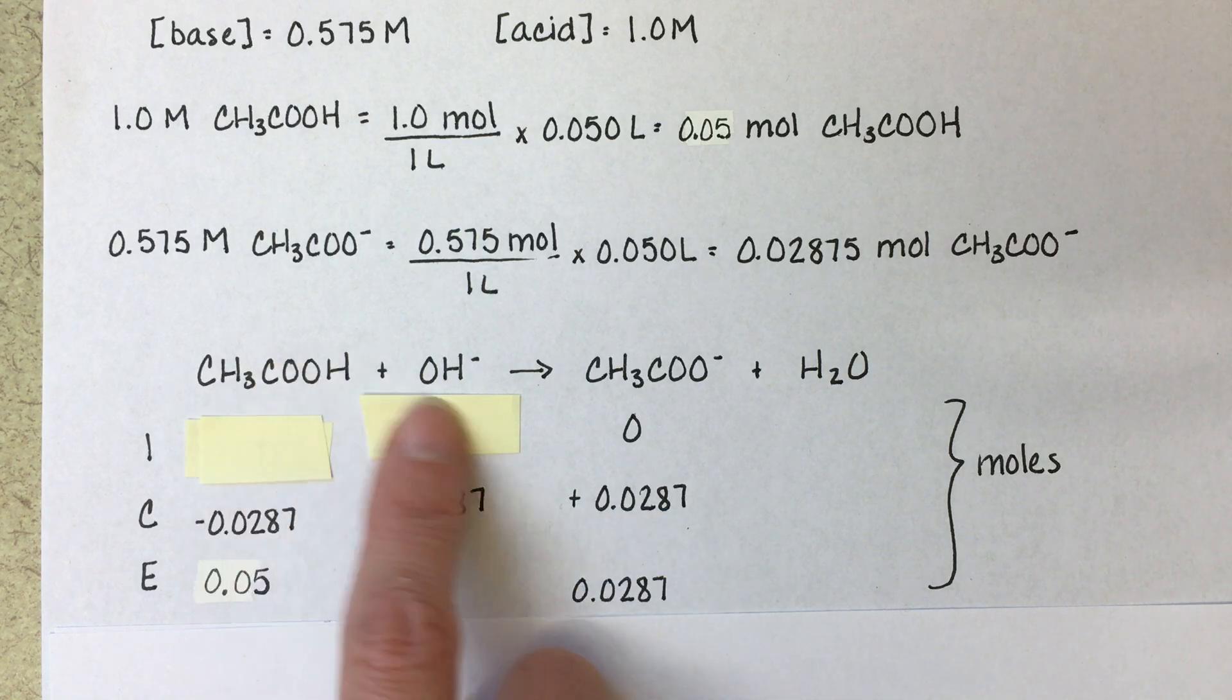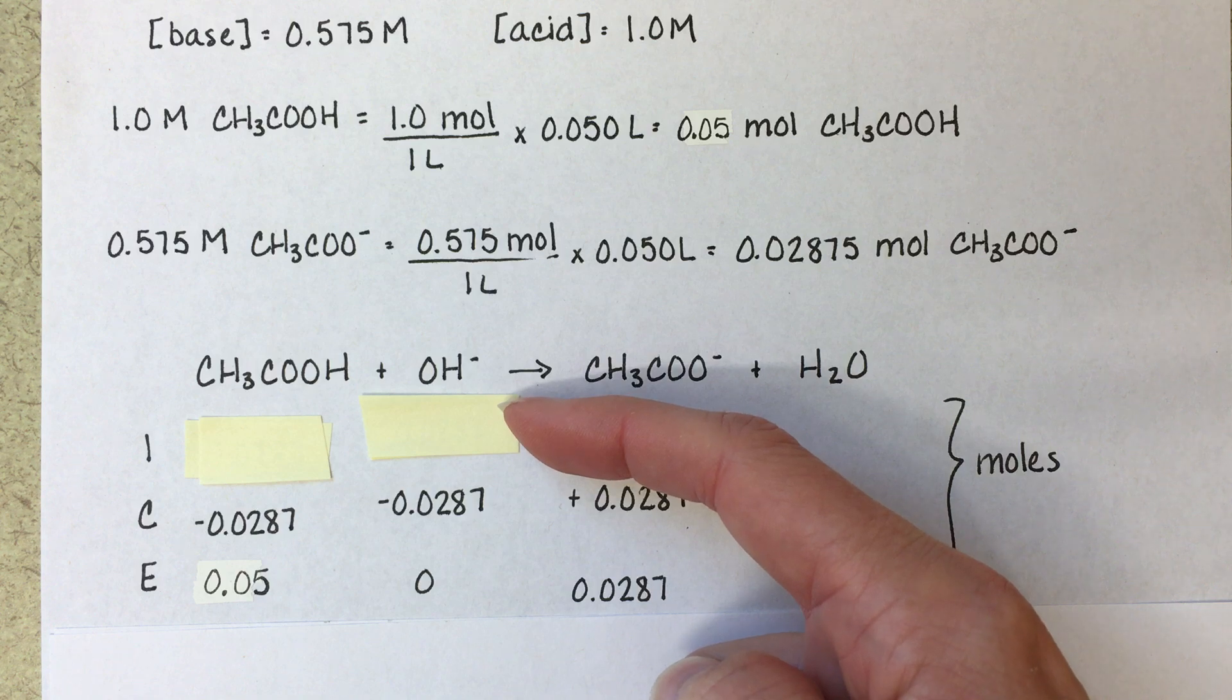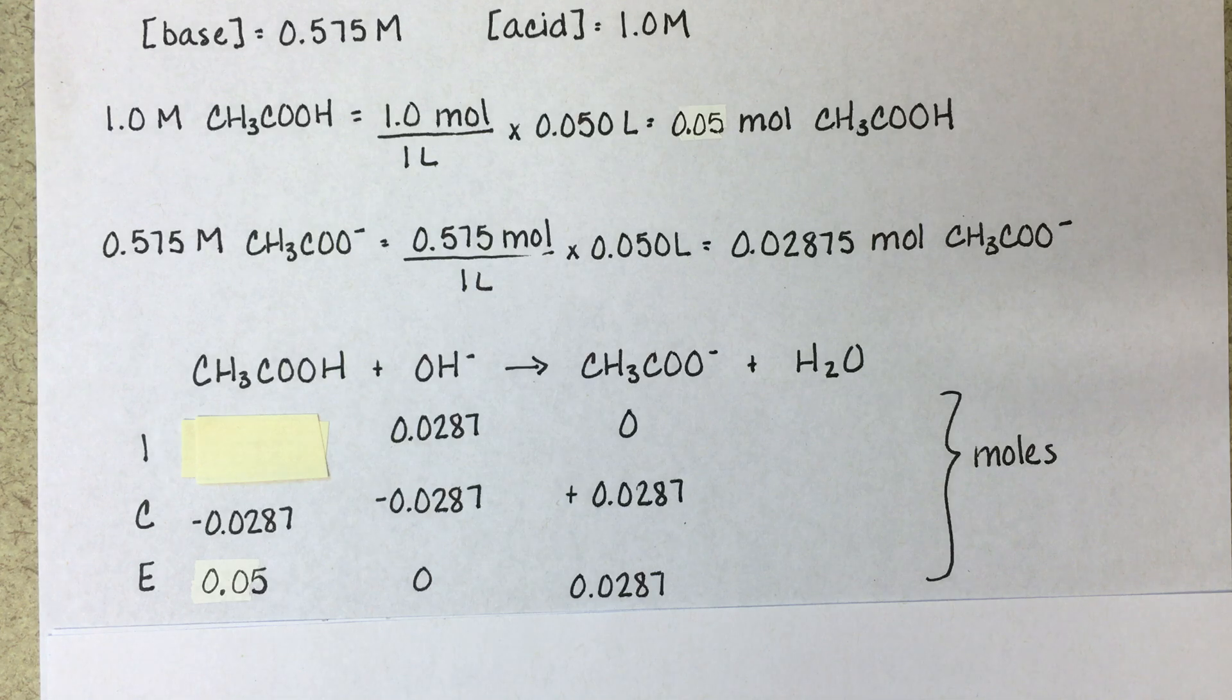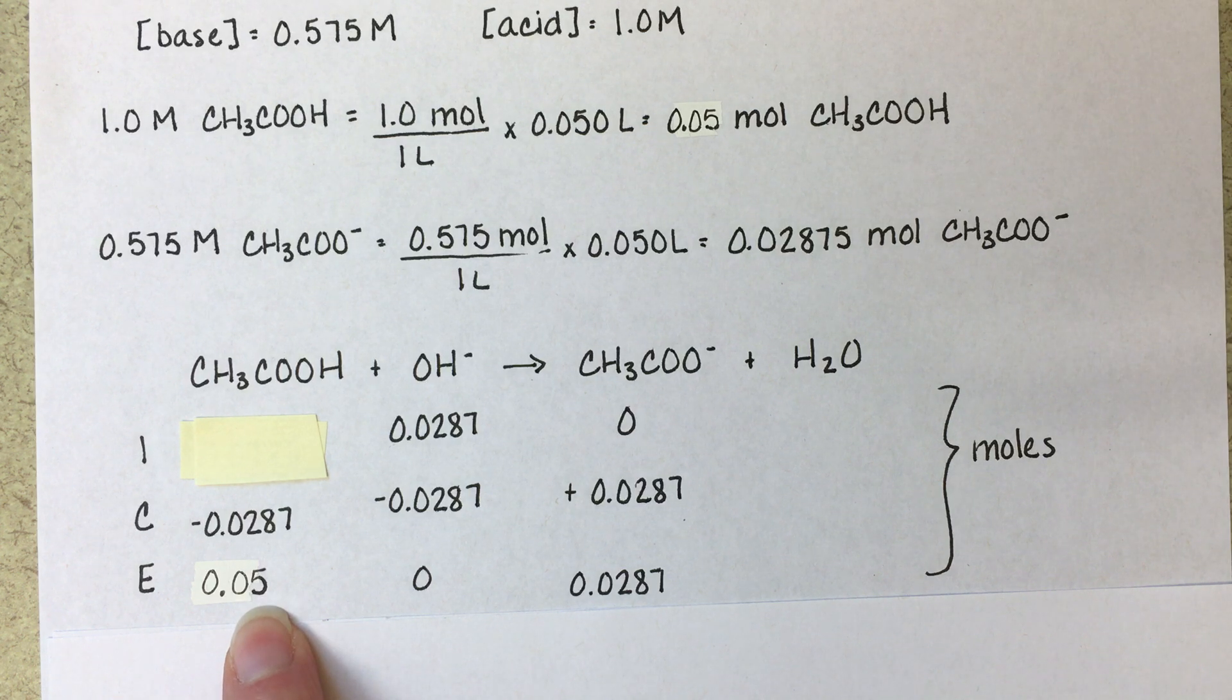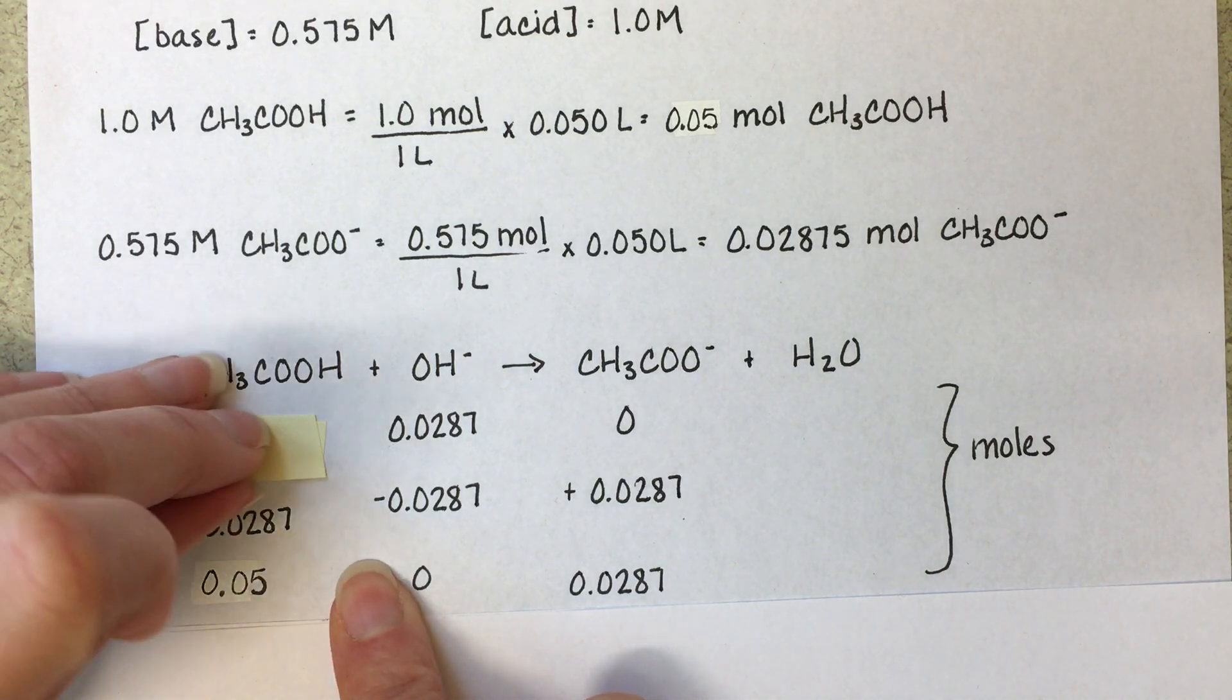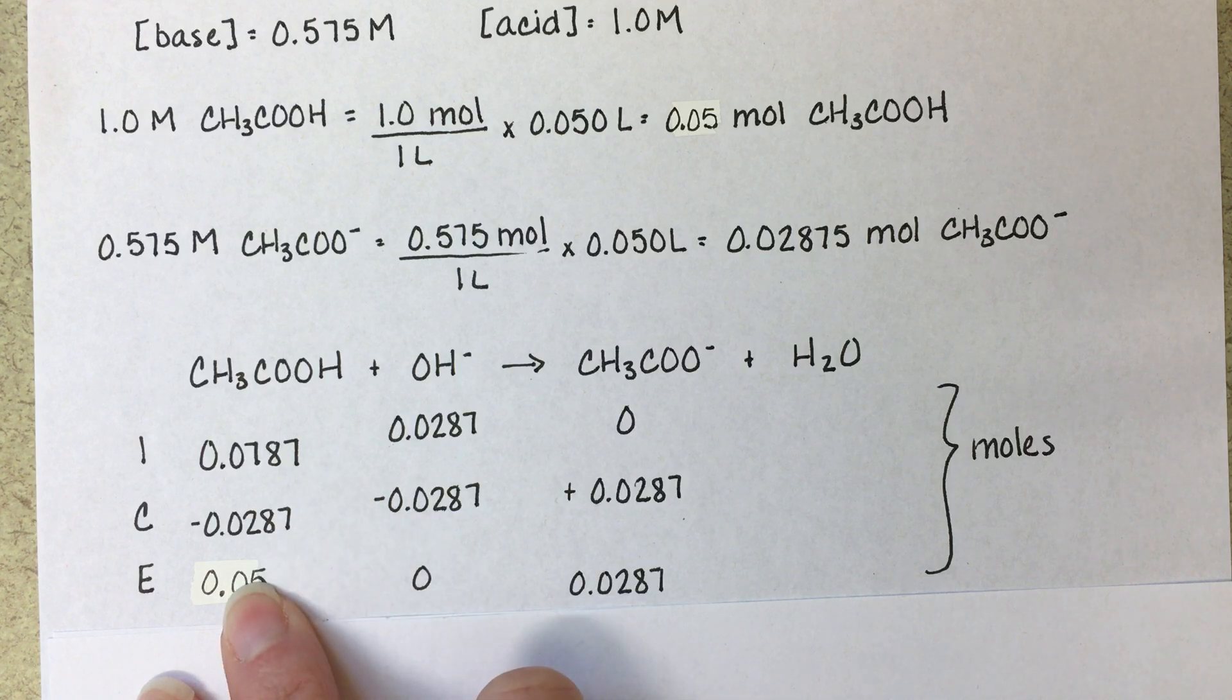And this will allow us to solve for these amounts as well, because we know that however much hydroxide we start with, we need to end with none of it, nothing. So our initial amount of hydroxide has to be 0.0287 in order for this to be zero. And likewise, if we're going to use up 0.0287 acetic acid, and we want to end with 0.05, that tells us that we need to start with 0.0787 in order to end with the right amount.